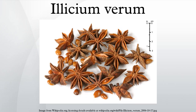Illicium verum is a medium-sized native evergreen tree of northeast Vietnam and southwest China. A spice commonly called star anise, star anise seed, or Chinese star anise, that closely resembles anise in flavor, is obtained from the star-shaped pericarp of the fruit of Illicium verum, which are harvested just before ripening.